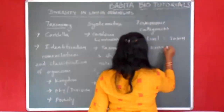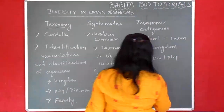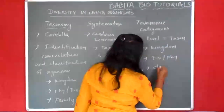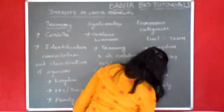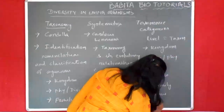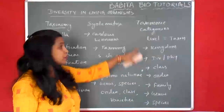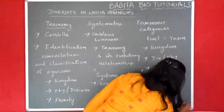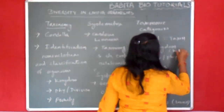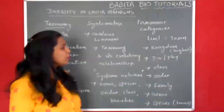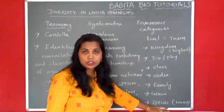The hierarchical order starts from Kingdom, then Phylum or Division, then Class, Order, Family, Genus, and Species. The lowest level in this hierarchical order is Species, and the highest level is Kingdom. So the topmost position in the hierarchy is Kingdom, and Species is at the bottom.